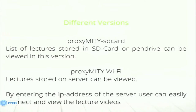There were two different versions of Proximity: Proximity SD Card and Proximity Wi-Fi. In the SD card version, all lectures stored on the SD card or pen drive can be viewed. In the Wi-Fi version, lectures stored on a server can be viewed by providing the IP address of the local server where the video folder is present and configuring the settings accordingly.